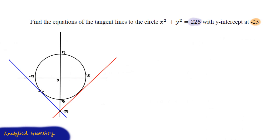The easiest approach for this problem is to concentrate on the points of contact between the tangent line and the circle. Also notice that at these points of contact, because we have a common y-intercept at minus 25, these two points will be on the same horizontal line — in other words, they will share the same y-value.